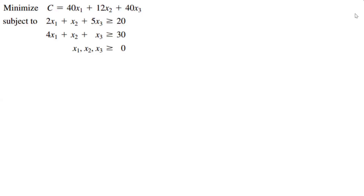Let's look at a fairly simple one here. We're going to want to minimize C, which usually is going to be our cost. That's going to be equal to 40x1 plus 12x2 plus 40x3. Subject to: 2x1 plus x2 plus 5x3 greater than or equal to 20, and 4x1 plus x2 plus x3 is greater than or equal to 30. And all our variables x1, x2, and x3 have to be greater than or equal to 0.